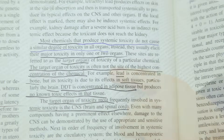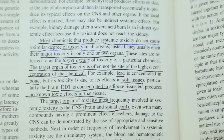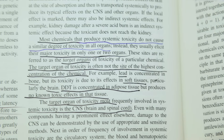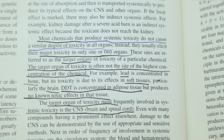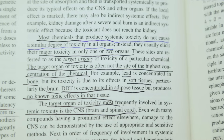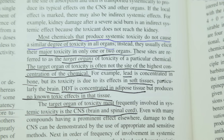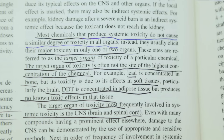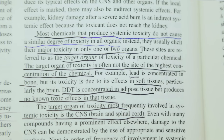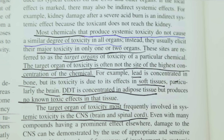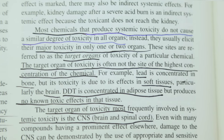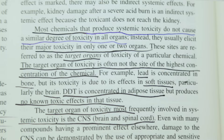It says that most chemicals that produce systemic toxicity do not cause a similar degree of toxicity in all organs. Instead, they usually elicit their major toxicity in only one or two organs. The target organ of toxicity is often not the site of the highest concentration of the chemical. For example, lead is concentrated in the bone, DDT is concentrated in the adipose tissue.